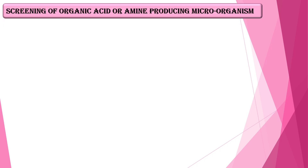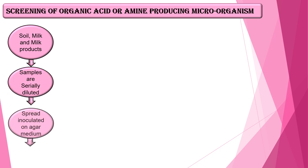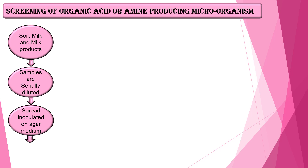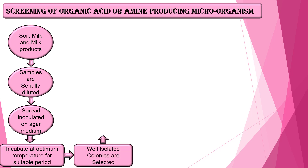The second example is screening of organic acid or amine producing microorganisms. Here, soil, milk and milk products are used as sources of sample. The samples are serially diluted and spread-inoculated on agar medium, then incubated at optimum temperature for a suitable period of time.